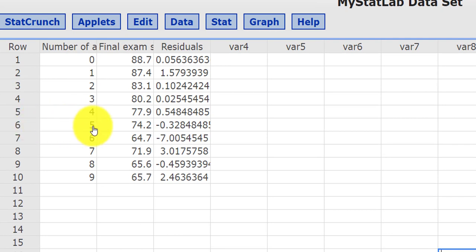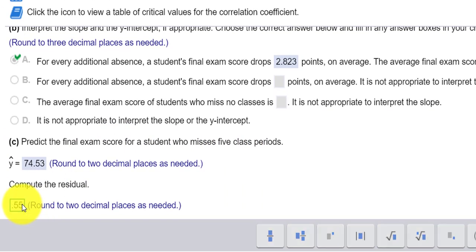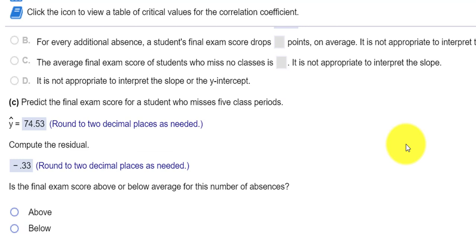Sorry about that. Five classes was negative 0.33. Negative 0.33. Then I double check. Okay. Let's try that now. And we check our answer. Okay, well done.